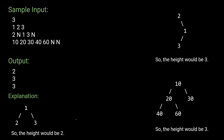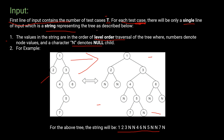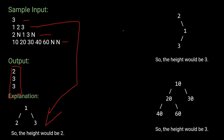Looking at the sample input, there are three test cases. For the first test case, the tree is given in level-order traversal — the first element goes to the root node, and the next two are its children. The height of this tree is 2, so the answer is 2.